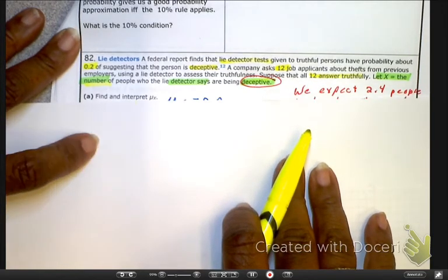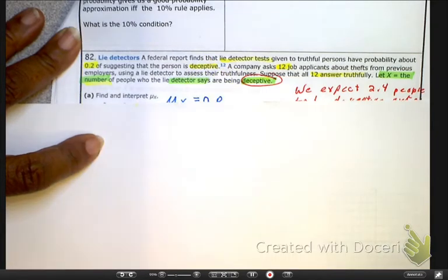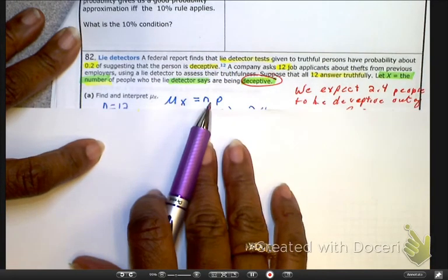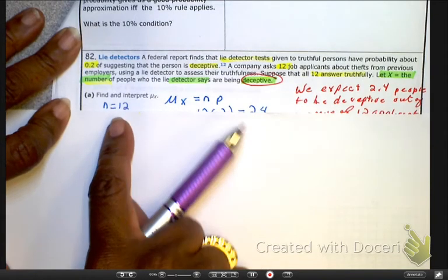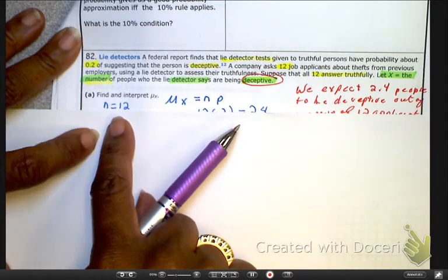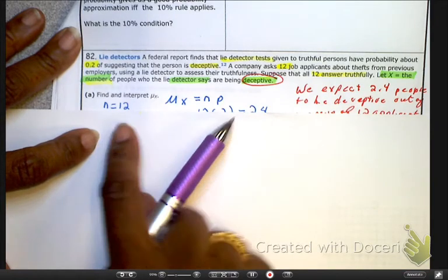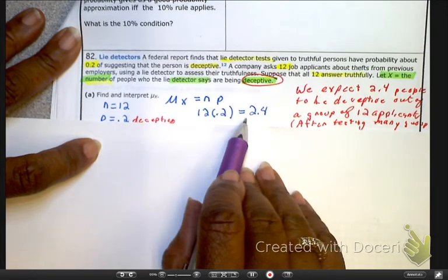So, here, I need to find and interpret the mean. Well, here's the formula, but come on, let's do this logically. If there are 12 people that are applicants, and we're saying 20% of those 12 people are considered deceptive, what do you do? So, you just multiply 12 times 0.2 to get 2.4.